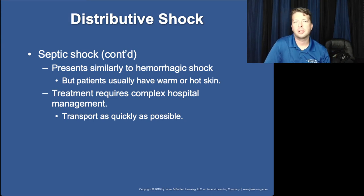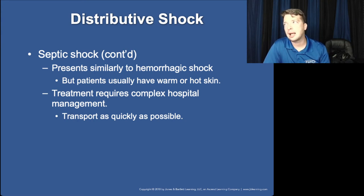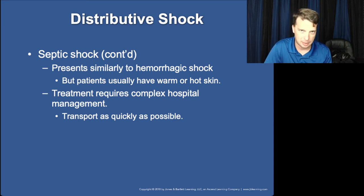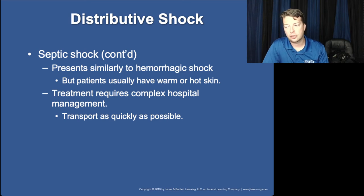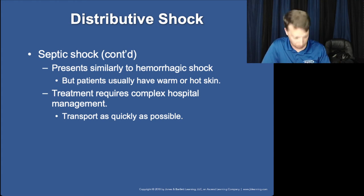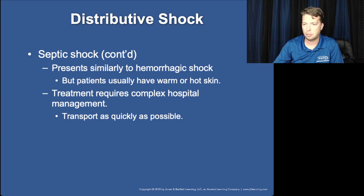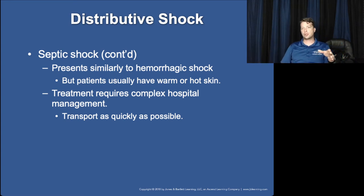One of the big indicators of distributive shock — no matter the cause — is that the skin will be warm and dry. This applies to anaphylaxis, neurogenic, and septic shock. In contrast, with hypovolemic and cardiogenic shock, the body responds with vasoconstriction causing pale, cool, clammy skin. Because distributive shock involves increased capillary and vascular size, you'll see flushed, warm, dry skin due to increased blood flow to the surface.